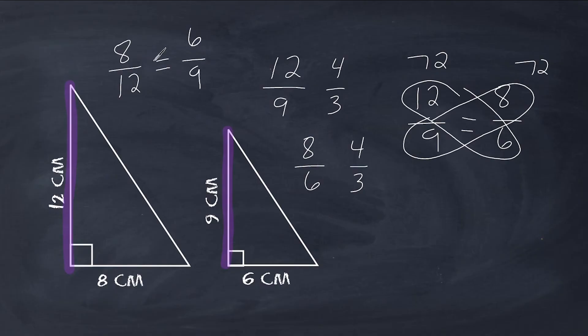And if we were to cross multiply, we can confirm that that would be true. 12 times 6 is 72. And 8 times 9 is also 72. So we would say that these triangles are in fact similar to each other.